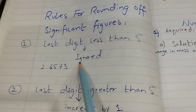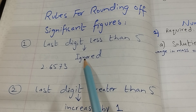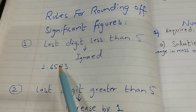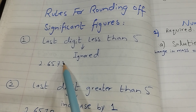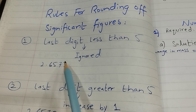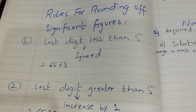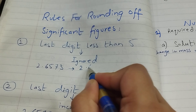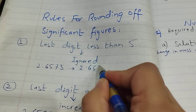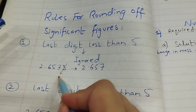तो उसके लिए rule यह है — ignore that number. हमने उस number को ignore कर देना है। जैसे यहाँ पर value 2.6573 है — अब यह three जो है, this is less than five, तो इसे हम ignore कर लेंगे और बाकी का number उसी तरह रहेगा। After round off, answer आएगा 2.657 — इस three को हमने ignore कर लिया।